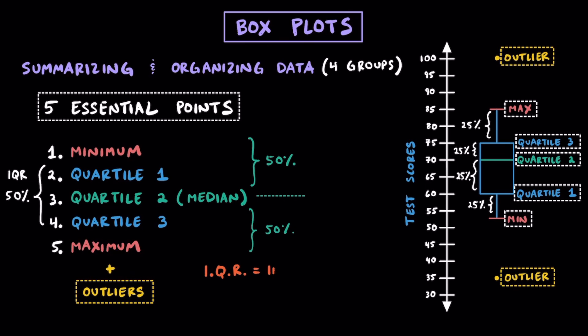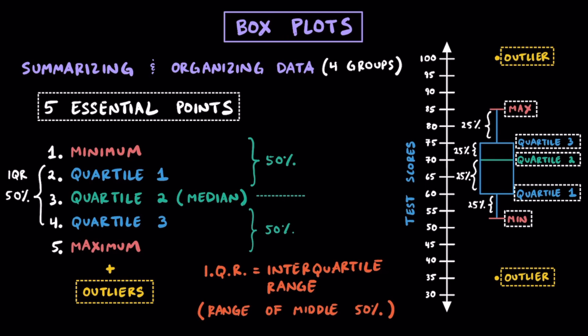In addition to showing you how to find the five essential points and outliers, I'll also show you how to find the IQR or interquartile range. Essentially, this is just a measure of variability that lets us know the range of the middle 50% of the data. Now that you've seen some of the vocabulary we're going to be using when talking about box plots and you've actually seen what one looks like, let's get into some examples together.